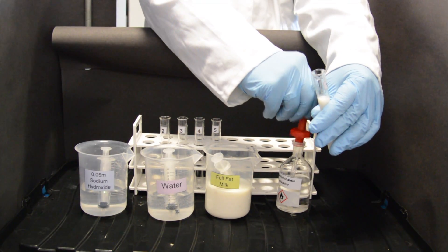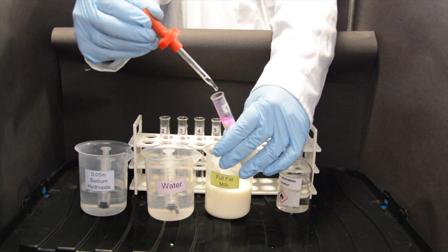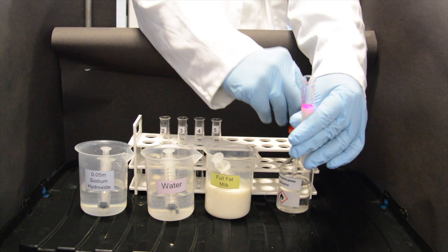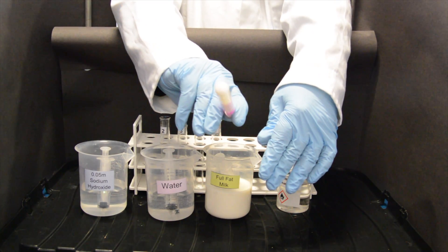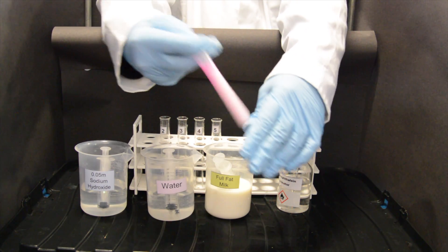To each of the tubes is added one or two drops of phenolphthalein indicator. The tube is inverted to mix the contents and ensure that the indicator is evenly distributed.